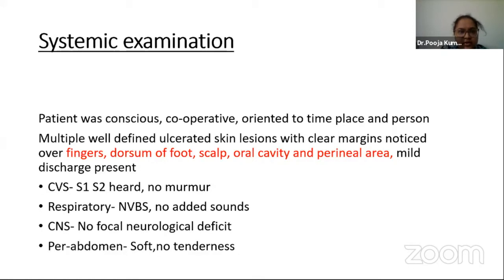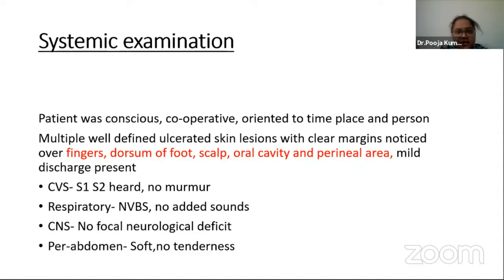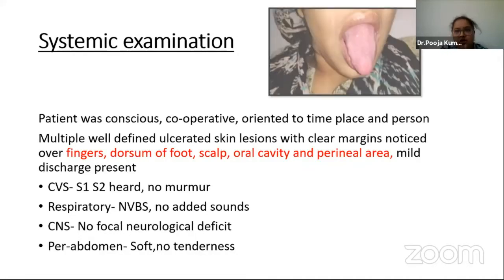On systemic examination, the patient was conscious, cooperative, and oriented to time, place, and person. We observed multiple well-defined ulcerated skin lesions with clear margins over the fingers, dorsum of foot, scalp, oral cavity, and perineal area, with mild discharge. Cardiovascular, respiratory, central nervous system, and GI examinations were all normal.